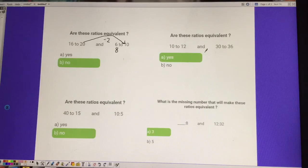What about the next one? 40 to 15 and 10 to 5? Well, I like to look at my first set of numbers, 40 to 10. In order to get from 40 to 10, I need to divide by 4.